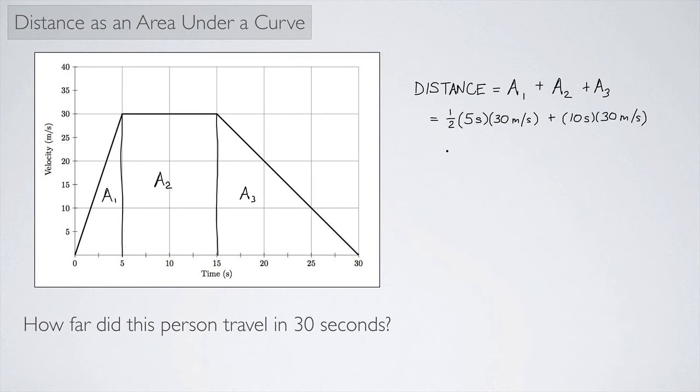And then area three. So area three is another triangle, so that's going to be one half. And then I have to put in the base. Now we're going from 15 to 30, so the base is 15 seconds. And the height is still 30 meters per second.